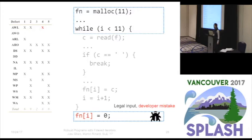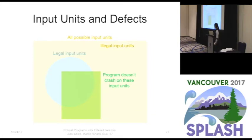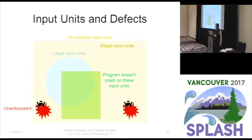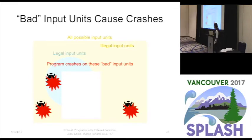Let's look at these inputs in terms of the bugs in the programs. Here's a set of all possible inputs: a set of legal input units that satisfy the specification, and the rest are illegal. There's also a set of input units where the program doesn't crash; outside of this set, the program has bugs and may crash — because of unanticipated input, illegal input values, or even extreme cases or developer mistakes. We call these input units that cause crashes 'bad input units.'